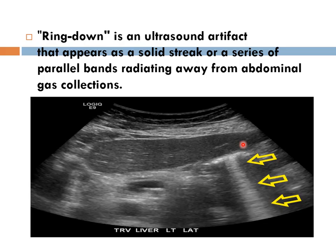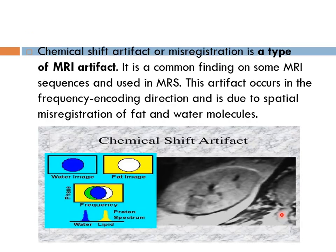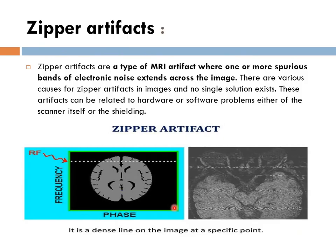We have other examples of artifacts, like those frequently seen on ultrasound — dense white lines formed by gas, called ring-down artifact. We have the chemical shift artifact due to misregistration of fat and water, seen as a dark line and a white line on one side. And the zipper artifact, which produces noisy lines — related to hardware or software problems, or shielding issues where signal gets in from outside the scanner.